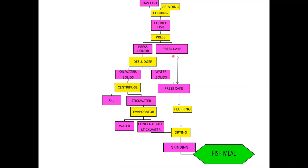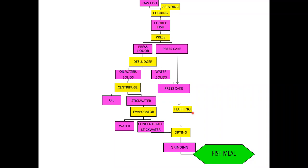After applying pressure to the cooked fish, we get two products: press cake and press liquor. The press cake is used for production of fish meal. It contains about 50 to 55 percent moisture and 3 to 4 percent oil. Before drying, the press cake is fluffed — broken into small pieces to increase surface area, which enhances the rate of drying.